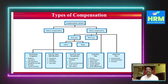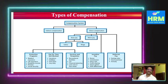Pay for time not worked under indirect compensation includes vacations, holidays, sick leaves, and jury duties — various leaves for which payment is made. Services include recreational facilities, car, financial planning, low-cost or free meals and canteen facilities, and sometimes housing with cable TV or internet.